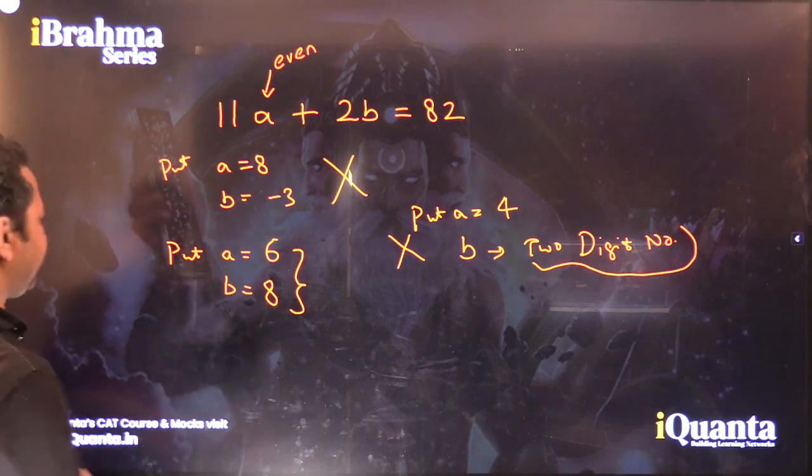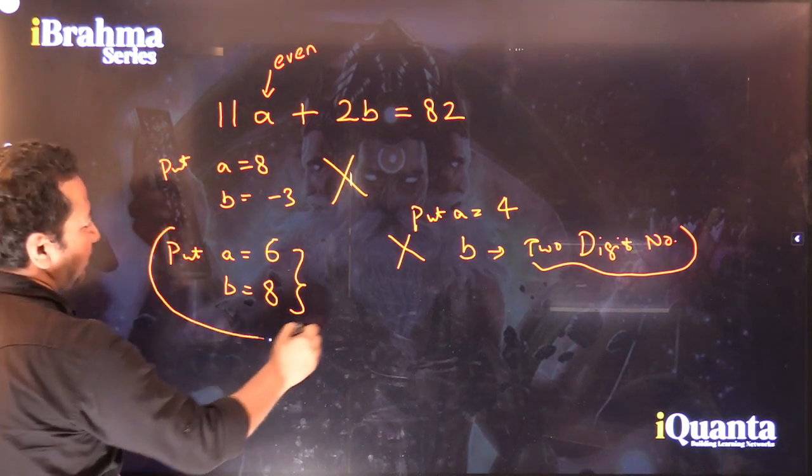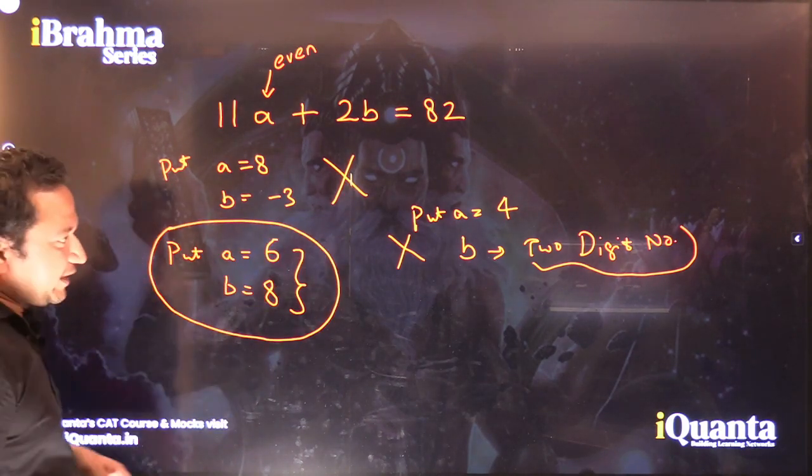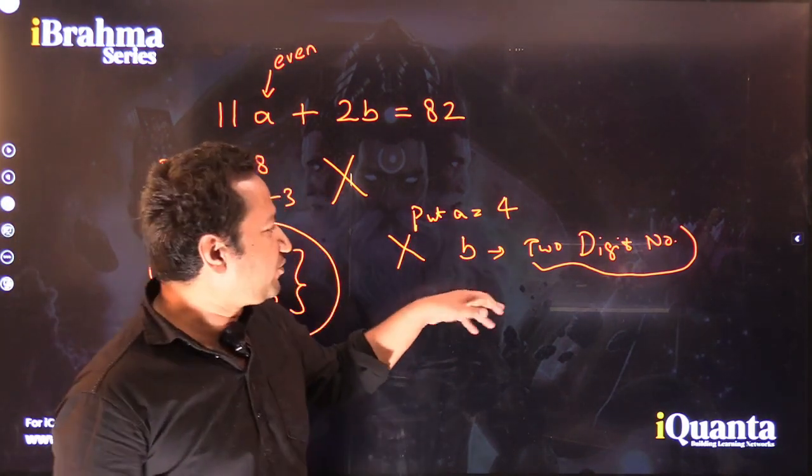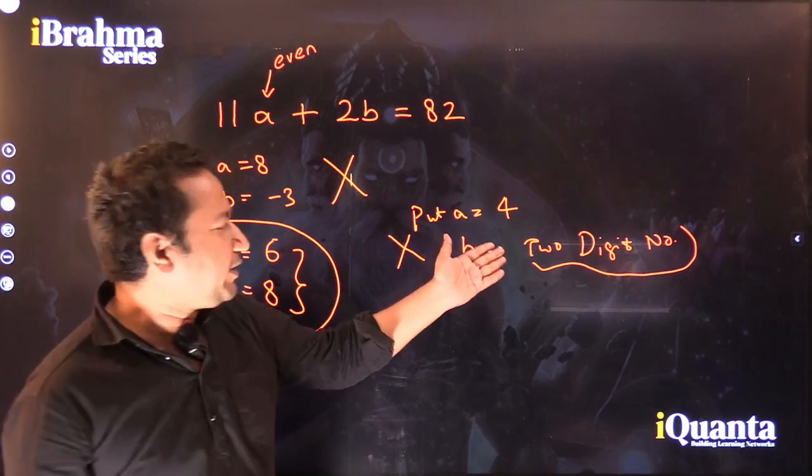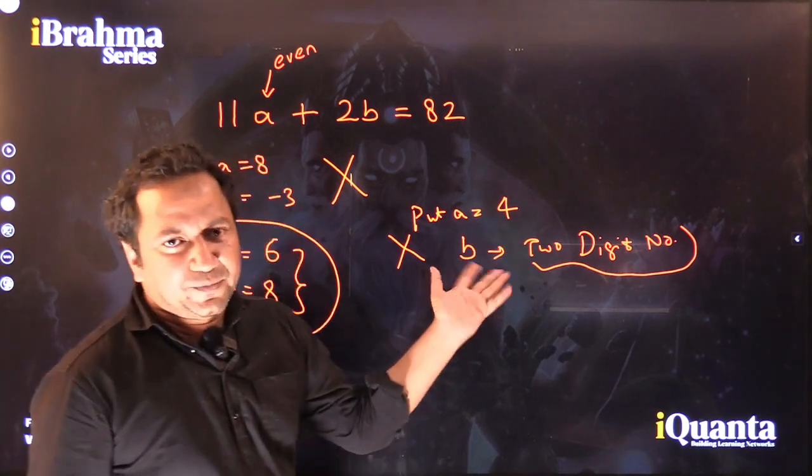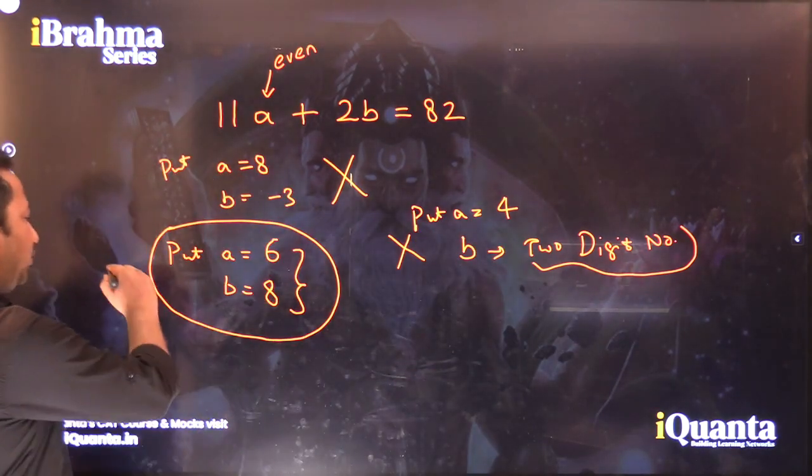So the only possible case we have here is where A is 6 and B is 8. If at A = 4 we are getting B as a two-digit number, of course we do not need to check further. We don't need to check A = 2. So this is the only possibility.